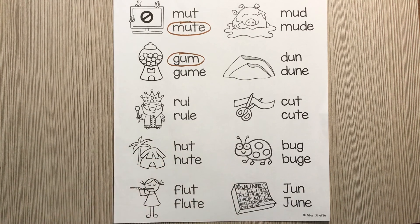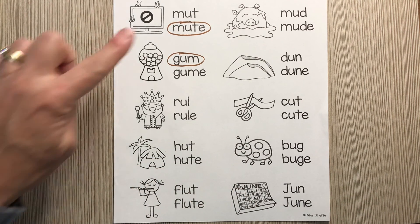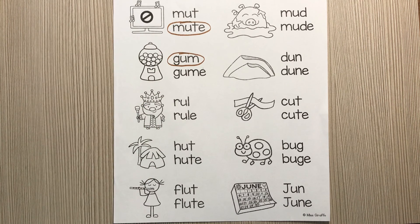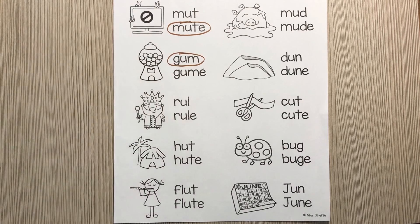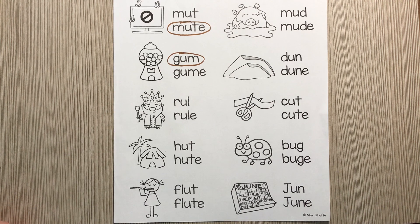Now, when you're ready, before you take your picture, read your words. Make sure they match your picture. If they don't, erase them and circle the correct word. And if you've done it with marker, you can cross it off and circle the correct word. Practice reading your words before you take a picture and show us on Seesaw.